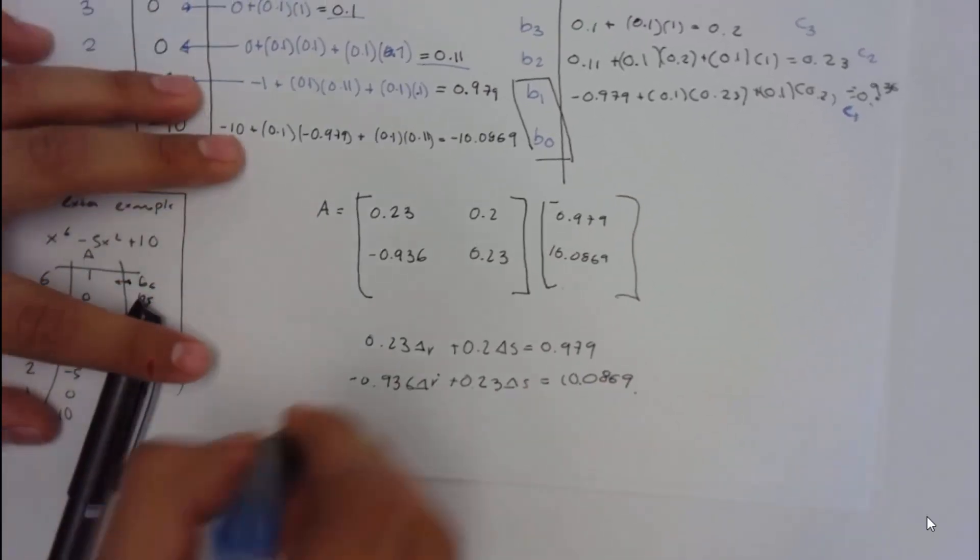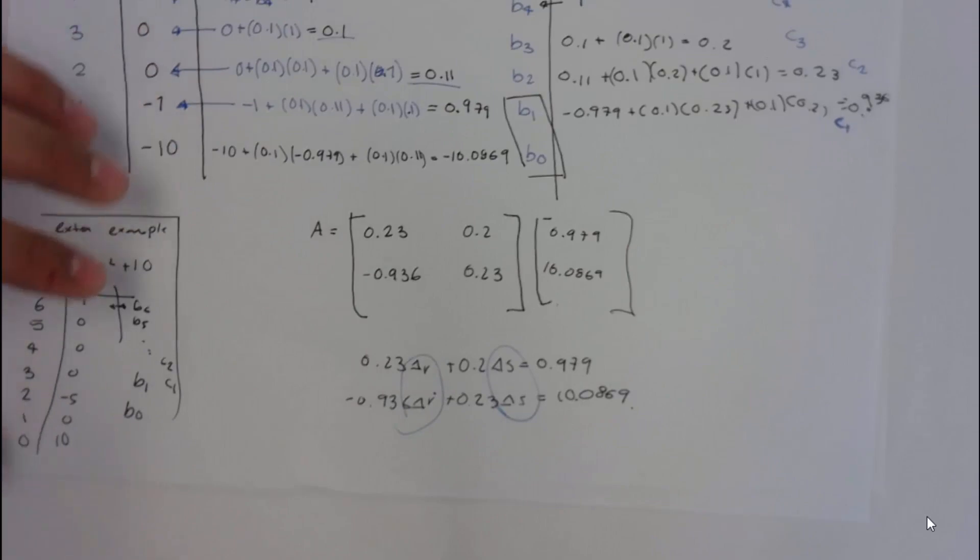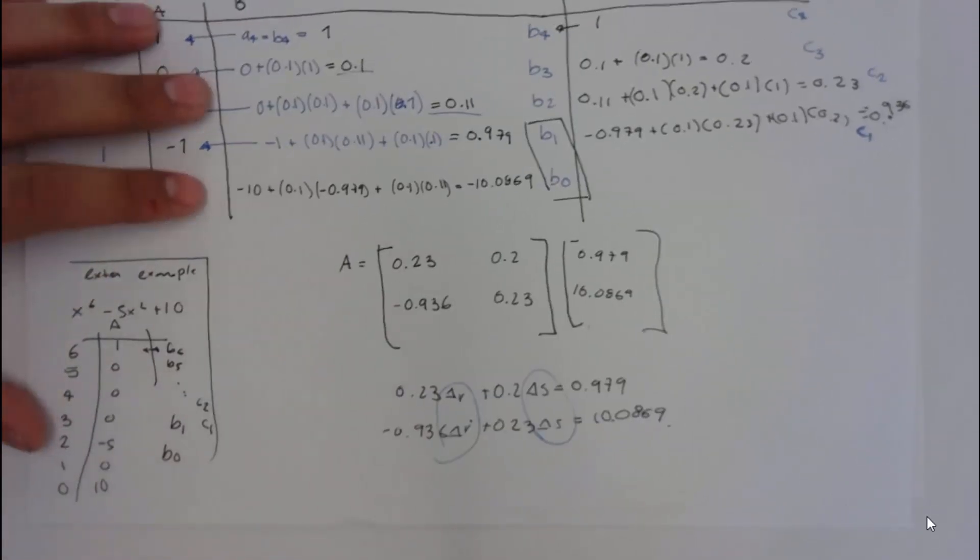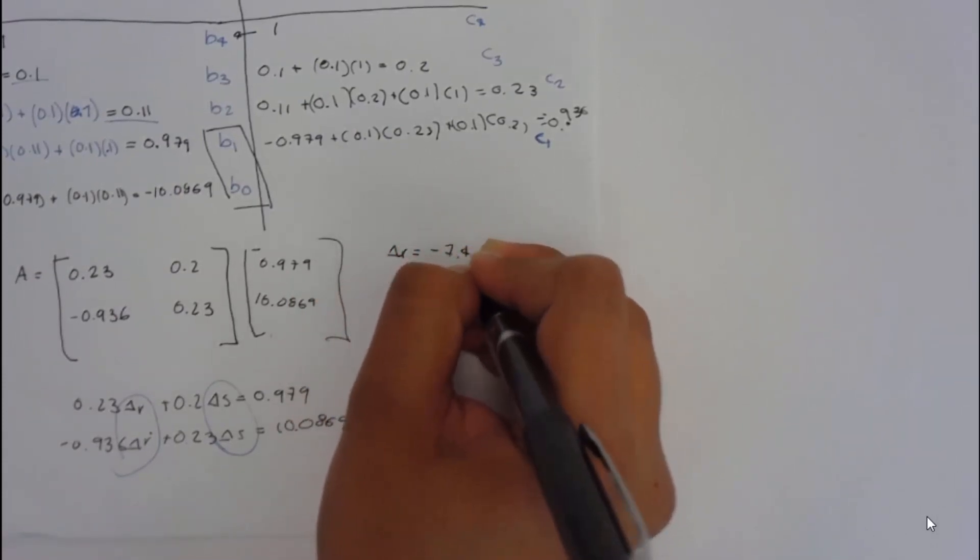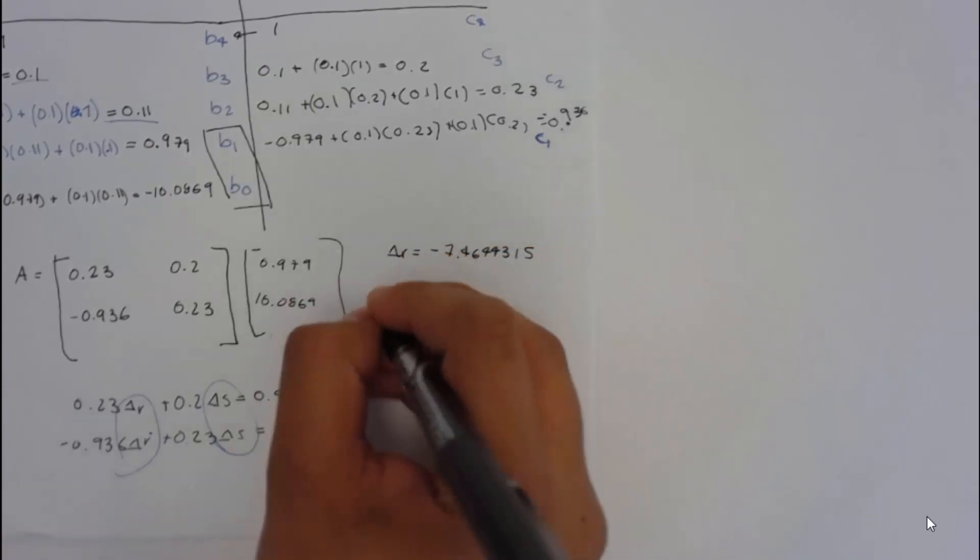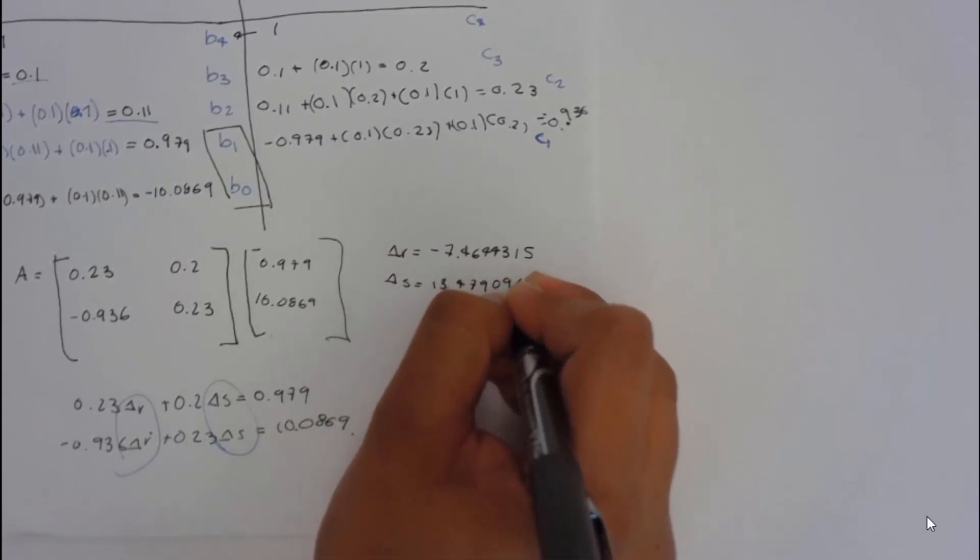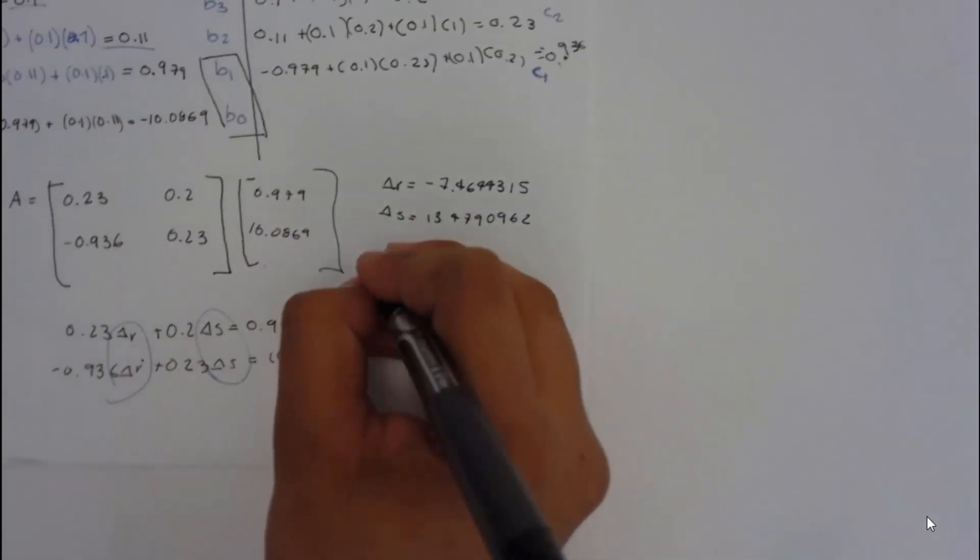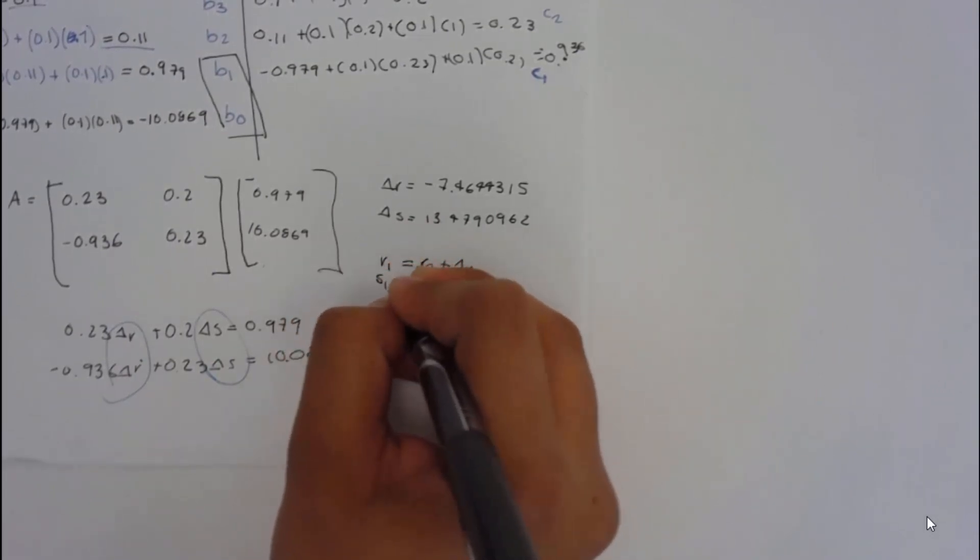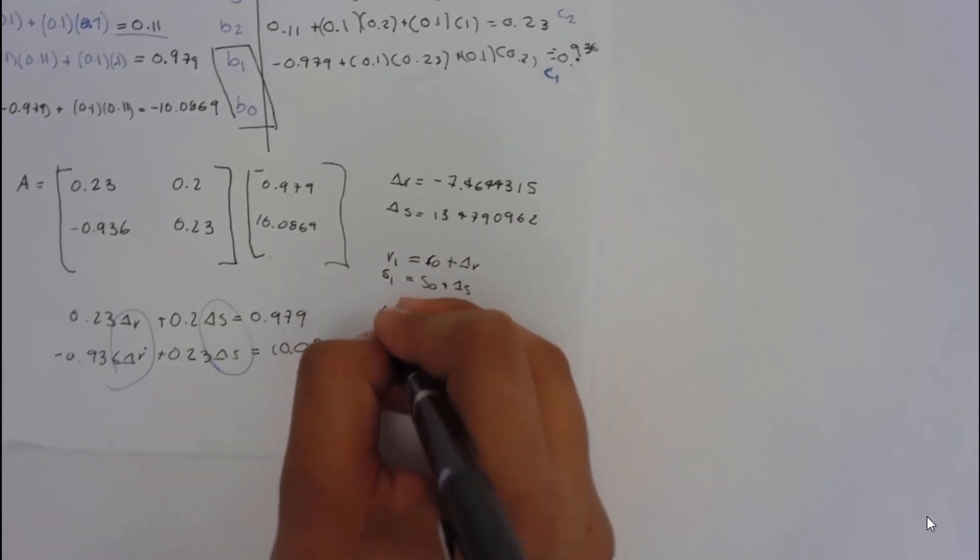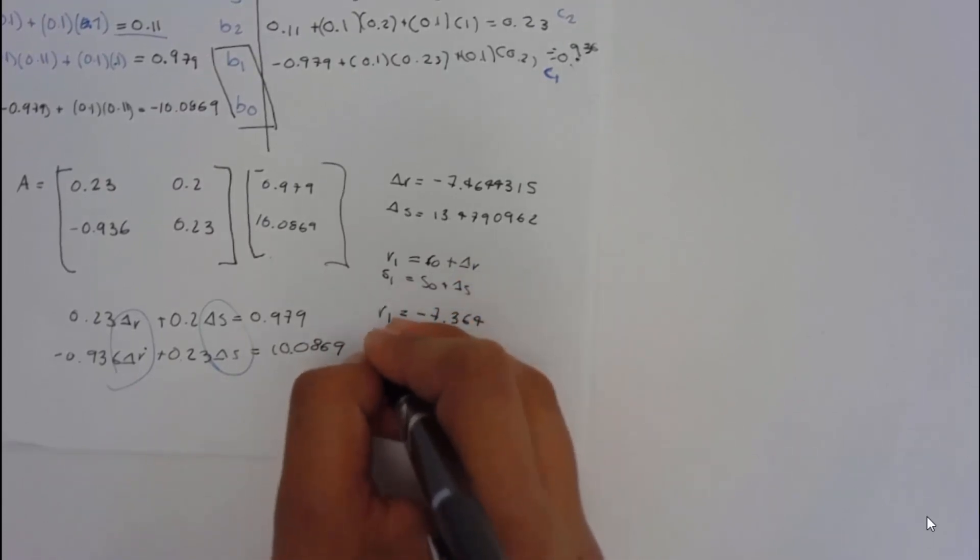Now, what we need to do is find delta r and delta s. It's basically, since we just have two equations, it's just going to be making one equal to, making everything equal to delta r or to delta s, just to save some time. I'll just give you the answer, which would be negative 7.4644315, and delta s, 13.479062. And once you have this, you calculate r1 by adding r0 plus delta r, and the same for s. So, the new r will be negative 7.364 and s1.